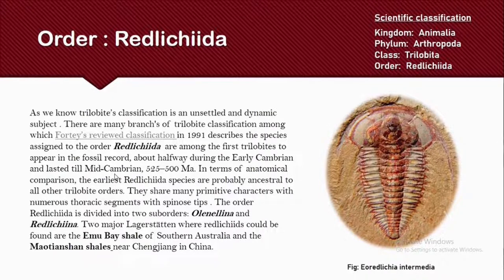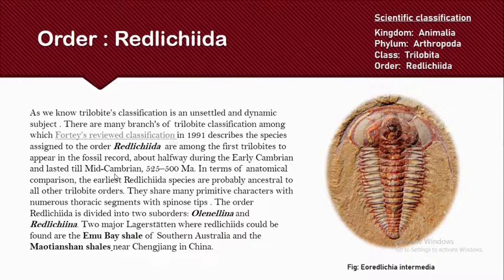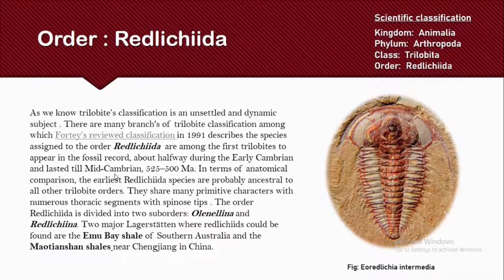When we compare the anatomy of Redlichiida to other trilobites, we can see it contains many ancestral properties, like having a numerous amount of thoracic segments with spinous tips. This order is then subdivided into two sub-orders: the Olenellina and the Redlichiina.